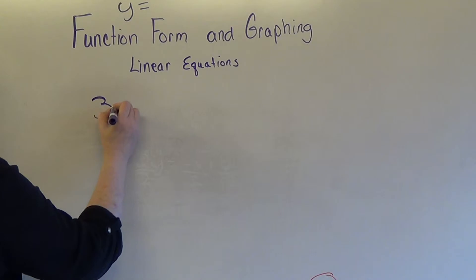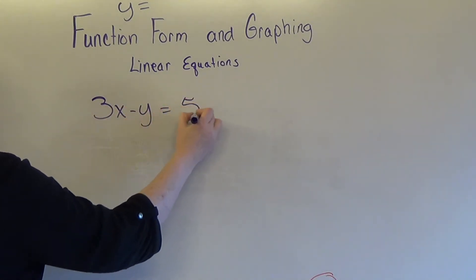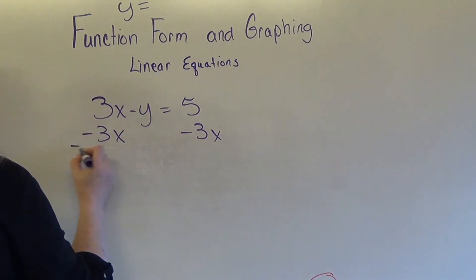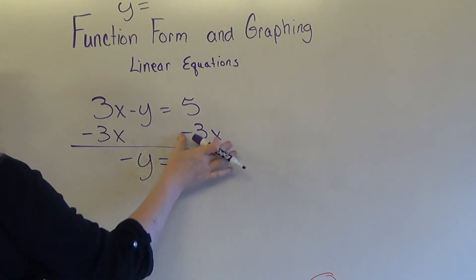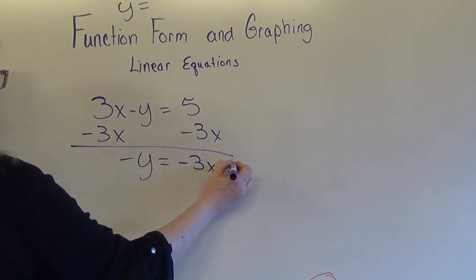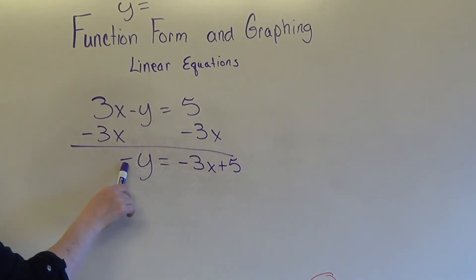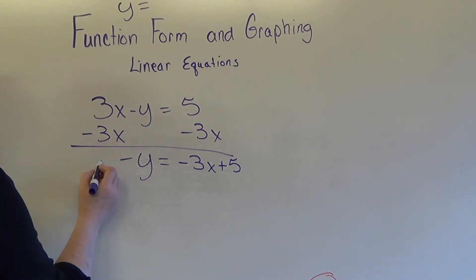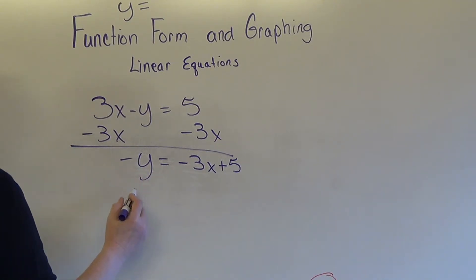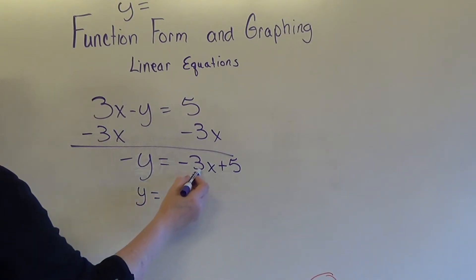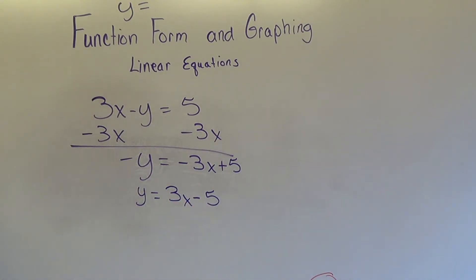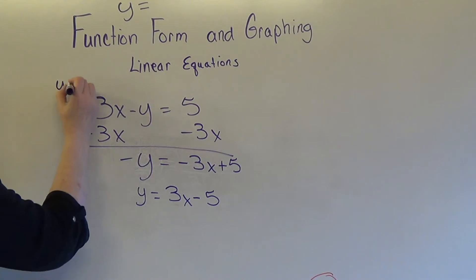Let's get this next equation into function form. We've got to move the x to the other side by subtraction. Drop down the y, putting the x term first: it's negative 3x, and the 5 is positive, so plus 5. Remember, you can't have a negative attached to the y, so I multiply every term by negative 1. That gives me positive y equals positive 3x minus 5. Now we have this equation in function form.